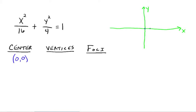So you want to go out 4 spots and plot a point, and then go out left of the center 4 spots and plot another point. Those are the coordinates for your vertices — negative 4, 0 and 4, 0.